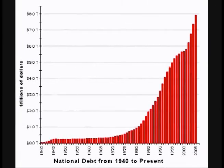The national debt hit the $1 trillion mark in 1981. It took over 200 years for the U.S. to rack up a debt of $1 trillion. By 1986 — just five years later — it was up to $2 trillion. Three years after that, we racked up another trillion, bringing it to $3 trillion. Two years later, another trillion, bringing it up to $4 trillion.